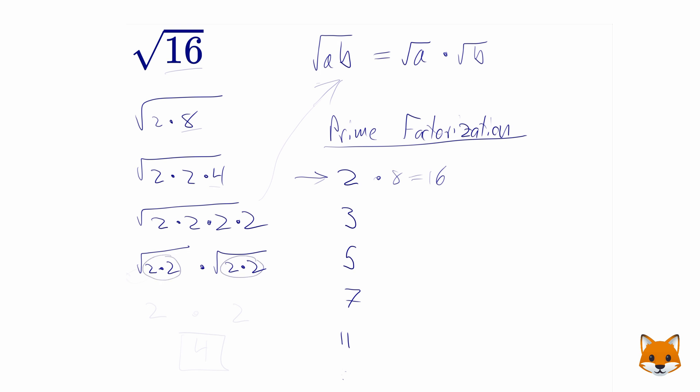Whenever you have a pair under a square root sign, you can just pull out a number outside of the square root. So this gets rewritten as simply 2. And this square root of 2 times 2 gets rewritten as simply 2. What we end up with is 2 times 2, or 4.